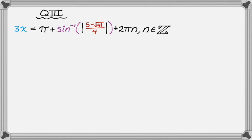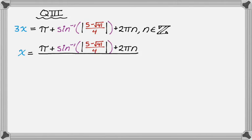And then this is easy enough to solve, so we're just going to take it and divide everything by 3. So we've got all of this, and then we need to divide everything by 3 to solve for x. And we still know that n is an element of the integers. So that's our quadrant 3 solution.